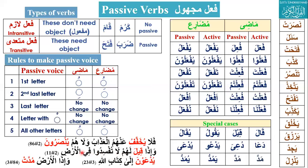Third example: 'Yud'awna ilaa kitaabillah.' Da'a yad'u — passive mudari' is yud'a, plural yud'awna — 'they are called.' Meaning: 'They are called towards the book of Allah.'